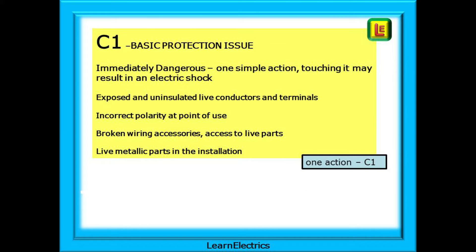What would trigger a C1 code? A C1 is a basic protection issue — it is immediately dangerous. Just touching the observed problem may result in an electric shock or fire. Things such as exposed and uninsulated live conductors and terminals that can be touched, incorrect polarity at the point of use, especially any live wire reversed with the earth or CPC, broken wiring accessories that give access to live parts, or live metallic parts in the installation. I always think of the one in C1 as being just one action to get an electric shock — there is the exposed conductor, there is the danger, one action: touch it.